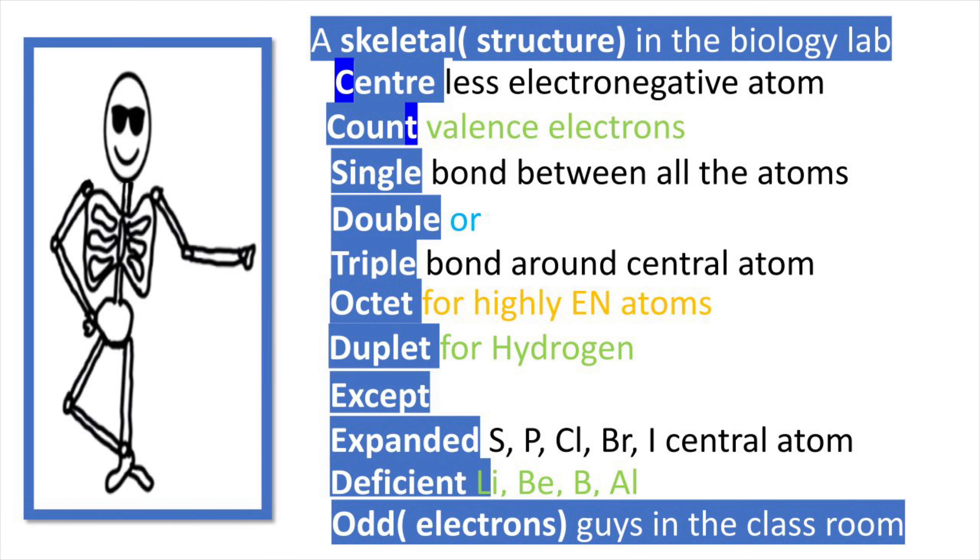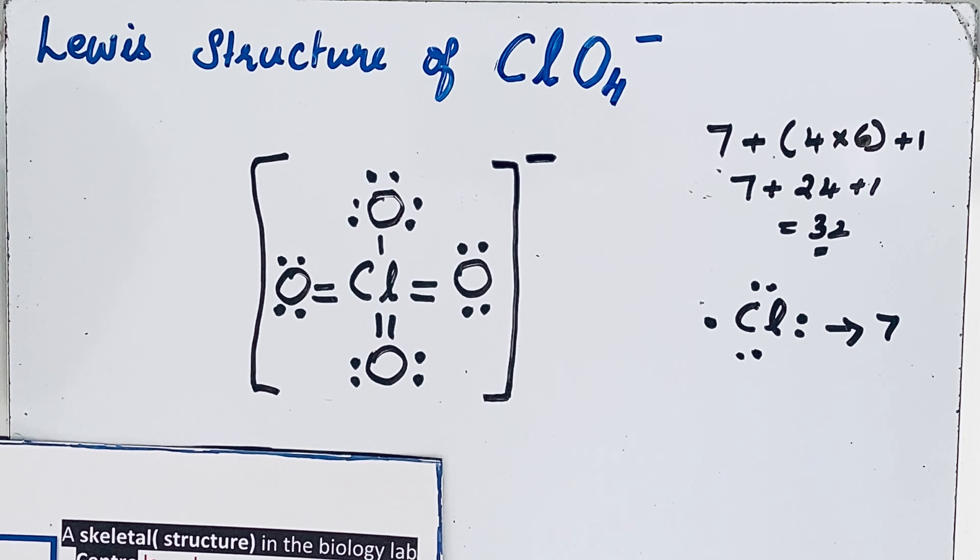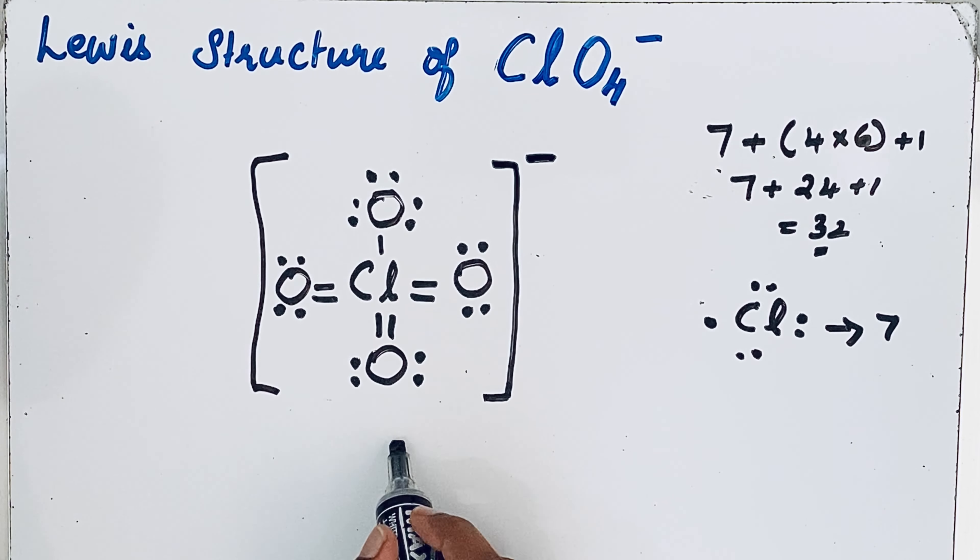Let us see our mnemonic once again. A skeletal structure in the biology lab, center, count, single, double, triple, octet, duplet, except expanded, deficient, odd guys in the classroom. So this is the Lewis structure of ClO4-. Thanks for watching.